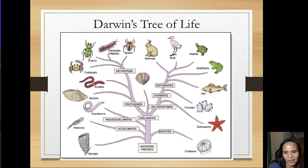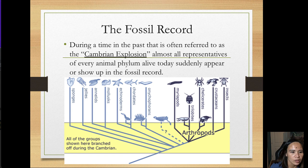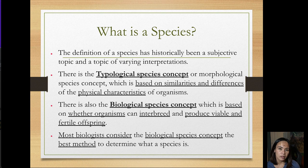This is why in Darwin's tree of life there is an ancestral protist or ancestral organism where everything is rooted. During the past event often referred to as the Cambrian explosion, almost all representatives of every animal phylum alive today suddenly appear in the fossil record. This is evidence that several organisms appeared back in time and are still alive today.